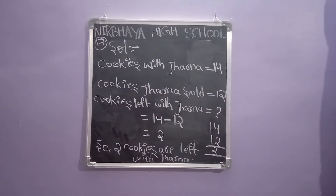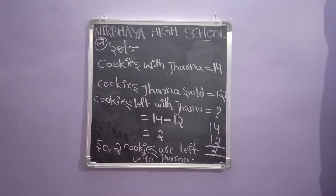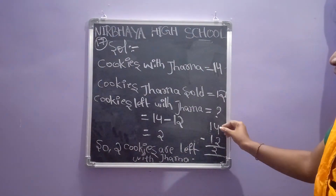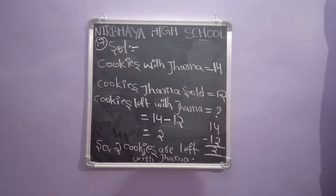So copy in your workbook, children. 17th one: how many cookies are left? 2 cookies are left with Jana. Total number of cookies are 14. Jana sold 12 cookies. So how many cookies are left with Jana? 14 minus 12: 4 minus 2 equals 2, and 1 minus 1 means no value. So 14 minus 12 equals 2. 2 cookies are left with Jana.